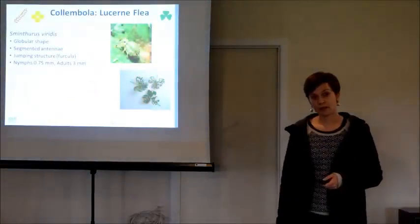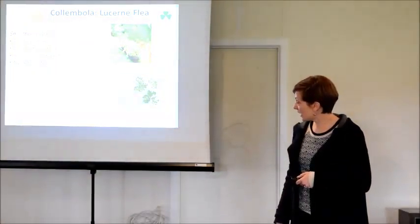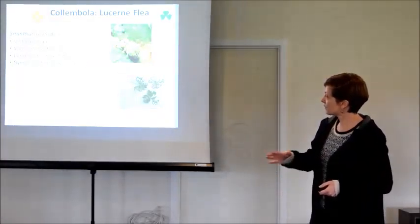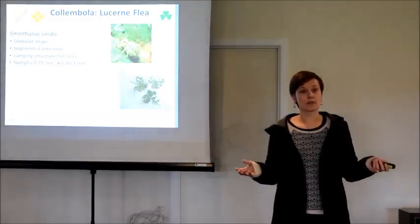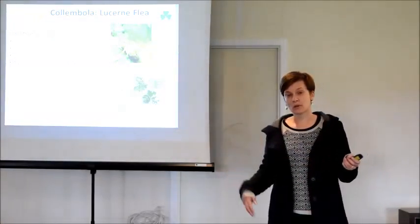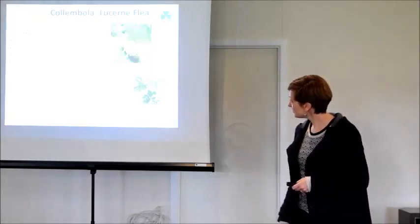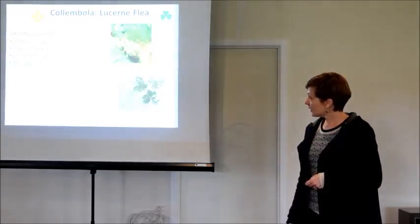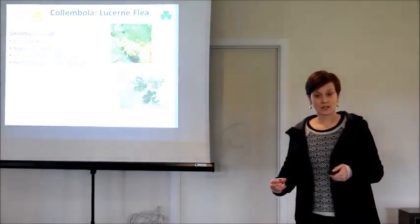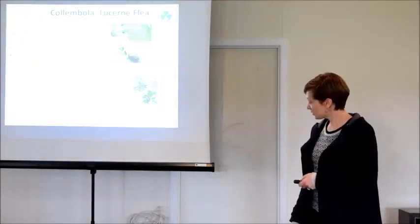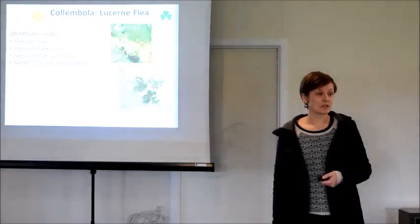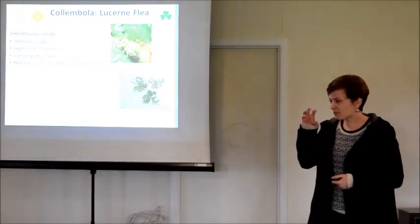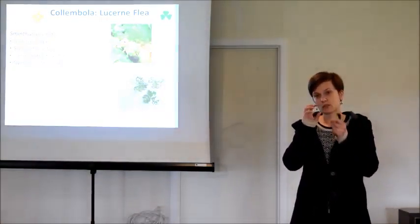Just moving on now to talk about lucerne flea. This is another emergence pest that you might see out and about now. It's actually not a flea at all. It's a springtail or a collembola. It has this little thing under its abdomen called a furcula. And sometimes there's a lot of them in a paddock or a pasture. When you walk through the pasture, they'll jump around. So that's why they call it a springtail. They're globular in shape. They're quite pretty little insects. They've got segmented antennae. The adults can be quite large, up to three millimetres. I know that doesn't seem big, but you will notice them in the adult stage. Like the mites, what you will probably notice first is the damage. And they cause this pretty distinctive, what's called windowing in leaves. Where they just rasp at the top part of the leaf and leave these little windows between the different veins.